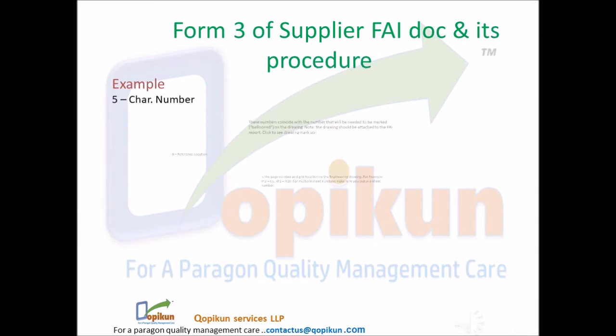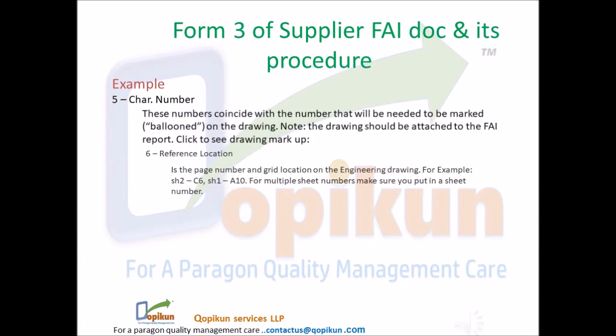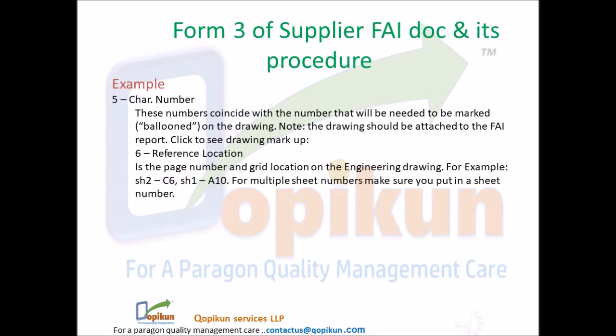Form 3 of supplier FAI DOC procedure. Field 5 — characteristic number: these numbers coincide with the numbers that will be needed to be marked, ballooned, on the drawing. Note: the drawing should be attached to the FAI report. Field 6 — reference location: the page number and grid location on the engineering drawing, for example SH2, C6 or SH1, A10. For multiple sheet numbers, make sure you put in the sheet number.